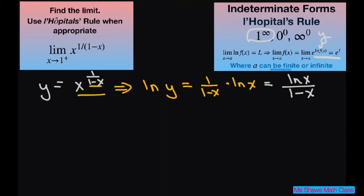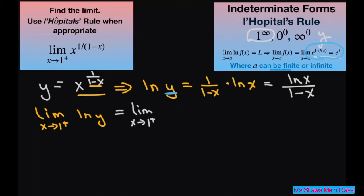Now, keep in mind what we're really going to be doing is finding the limit as x approaches 1 from the right of ln of y. Eventually we're going to need y, not ln of y. So this equals the limit as x approaches 1 from the right of ln of x divided by 1 minus x.